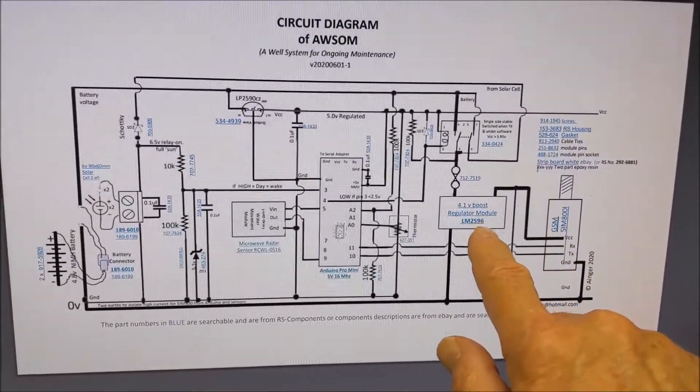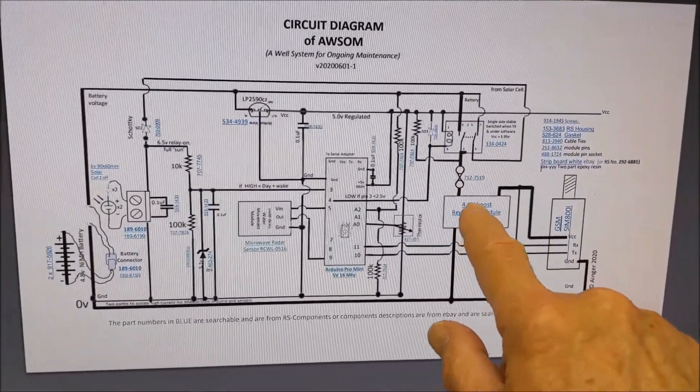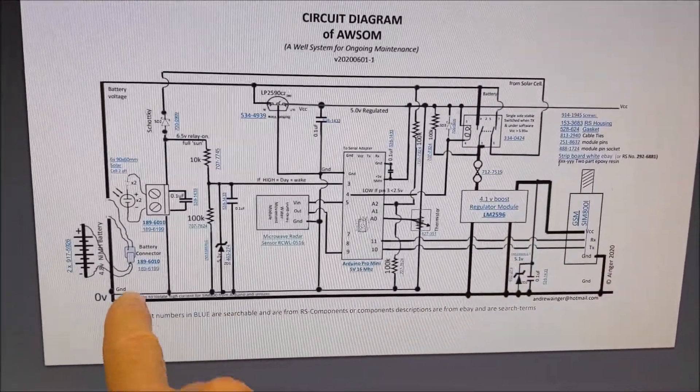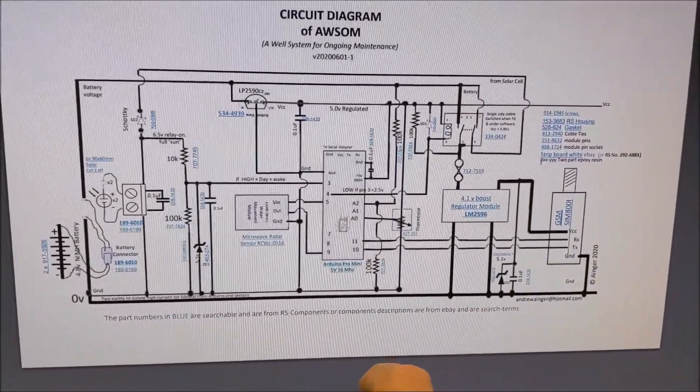This regulator is turned on by this relay via this fuse and has a return current line straight to the battery to stop giving spikes on the Arduino.